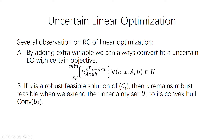First, we can find that by adding an extra variable, we can always convert it into an uncertainty linear optimization with a certain objective function. We just add a variable t to the objective function, and t must be larger than or equal to c_transpose x plus d, with the same constraints. So for any linear optimization, we can always find this transform, and in the very beginning we can assume that the objective function is certain for our problem.